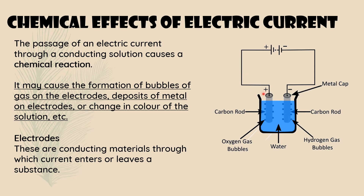When the switch is turned on, electricity starts to pass through the circuit. At that time you can see some bubbles on the two carbon rods. These carbon rods are called electrodes. By passing current through this conducting solution — here we took water — the water splits into oxygen gas and hydrogen gas. Water is H₂O, hydrogen and oxygen, so on one electrode we get hydrogen gas and on the other electrode we get oxygen gas.